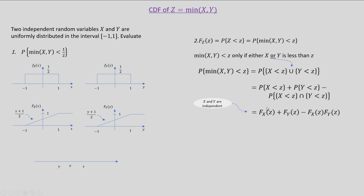Finally, probability that minimum of x comma y is less than z equals probability that x is less than z, plus probability that y is less than z, minus probability that x is less than z and y is less than z. Invoking the independence of x and y, this becomes F_x(z) plus F_y(z) minus F_x(z) times F_y(z). This is the final CDF of the transformation z equal to minimum of x comma y, provided x and y are independent random variables.